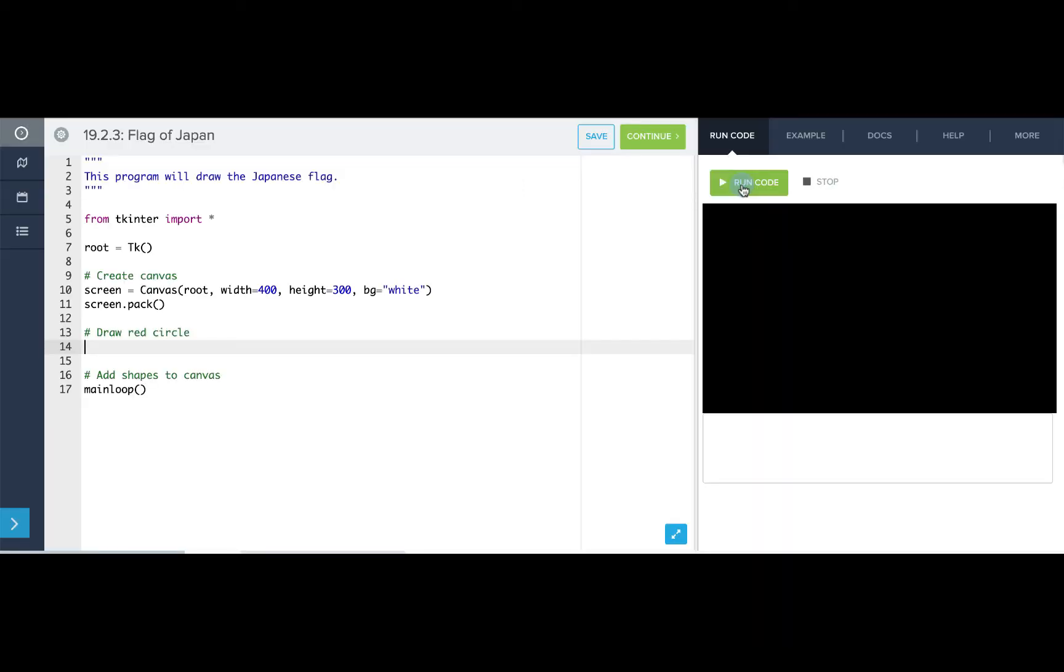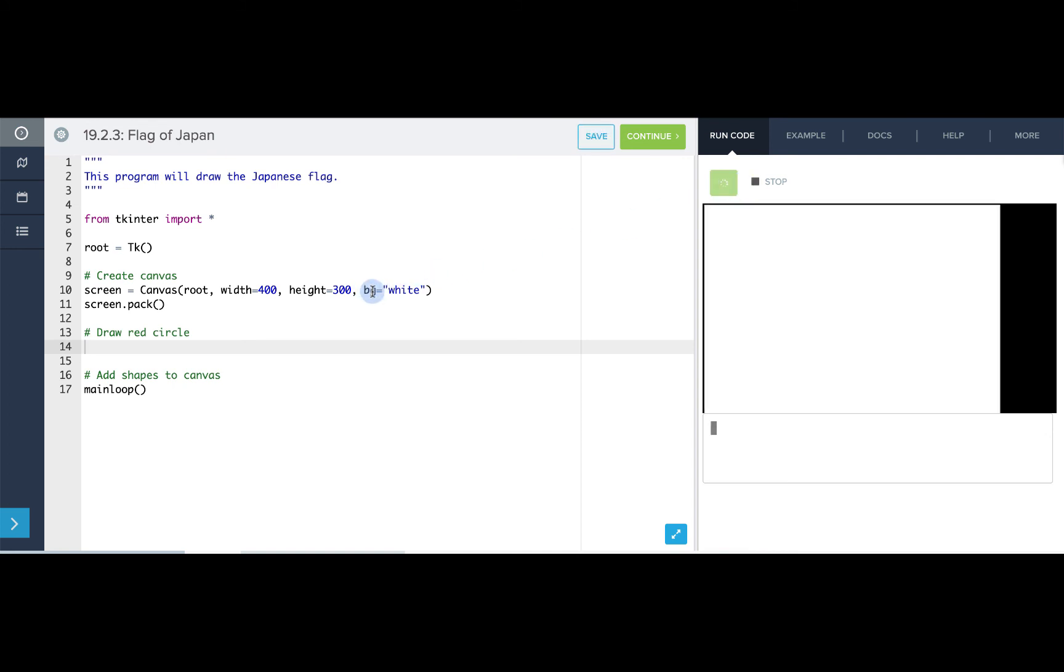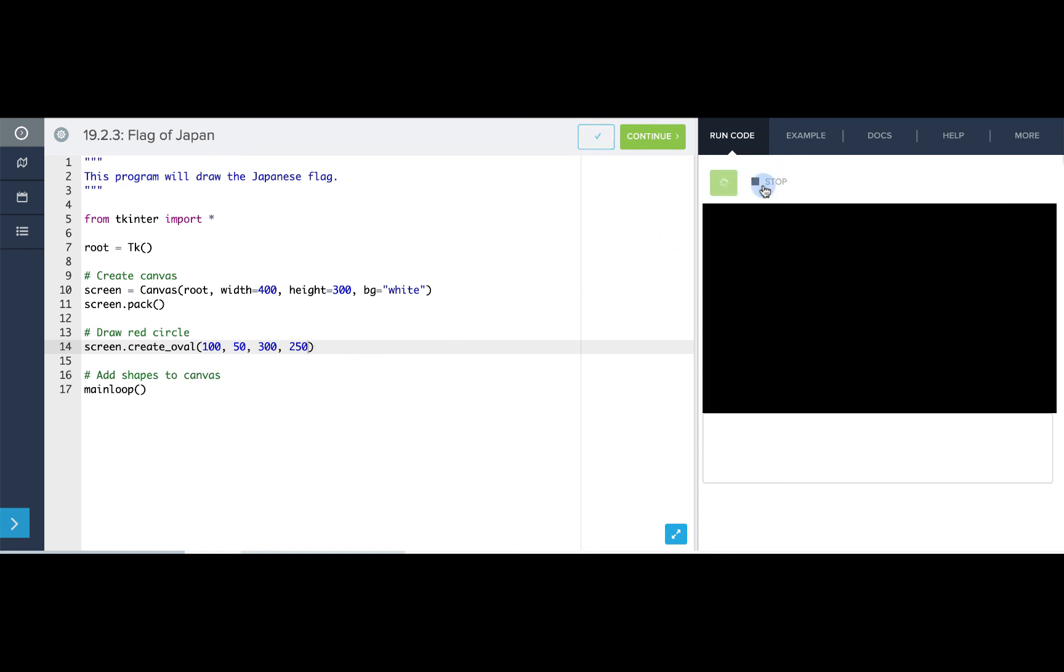You'll see that we're starting our program with a 400 by 300 canvas and using the bg attribute or background to change the background color to white. The next thing we need to do is draw our red circle onto our canvas. So we'll use the screen.createOval command and we'll input those values that we recently found. 100, 50 is our first top left coordinate and 300, 250 is the values for our bottom right hand corner. Let's see how this looks.